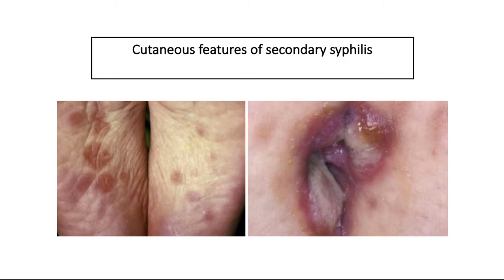Cutaneous features of secondary syphilis are the following. A non-itchy rash is present in 90% of patients with secondary syphilis. The rash might be subtle or might appear as rough red or reddish-brown papules or plaques, as on the left picture. The rash occurs typically on the trunk and frequently affects palms and soles. Rarely, the rash presents as a cluster of erythematous papules around a central scaly plaque resembling a flower. This floral morphology is described as corimbose syphilis.